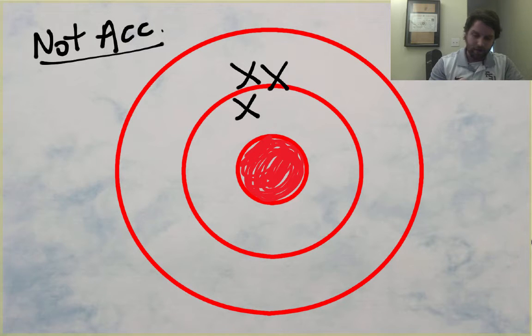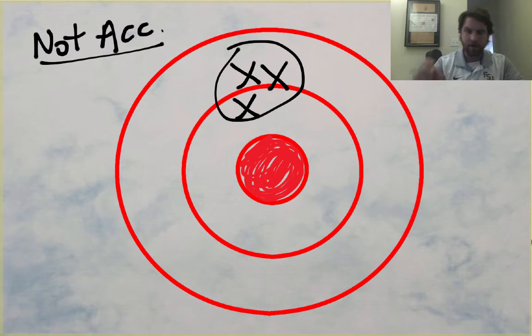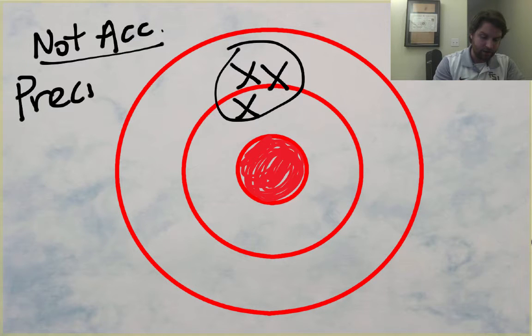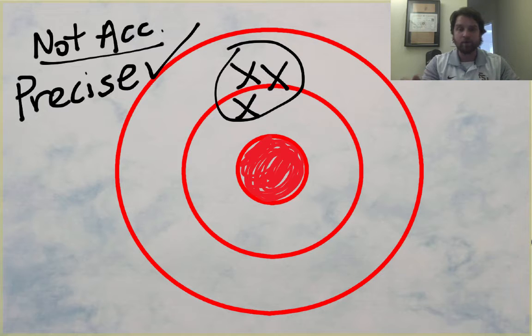But since we have a tight grouping right here, we are precise. So I'll put a precise and a check mark. That is precision. Precision is when you have your data points as a really tight group. Like you did it the same way every single time and you got data points very close together. They may not necessarily be accurate, meaning they didn't hit the mark of what you were trying to hit.